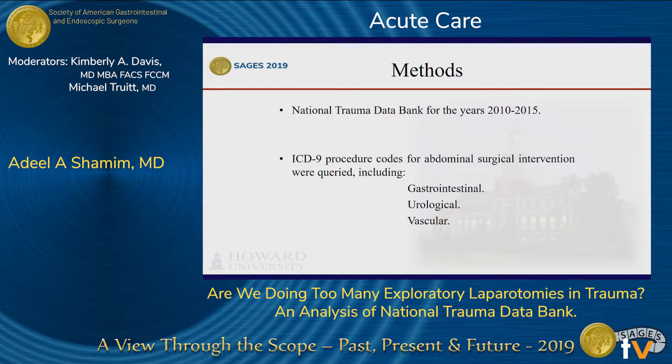We looked at the National Trauma Data Bank for the years 2010 to 2015. The ICD-9 procedure codes for abdominal surgical interventions were queried, including gastrointestinal, hepatic, splenic, urological, and vascular procedures.